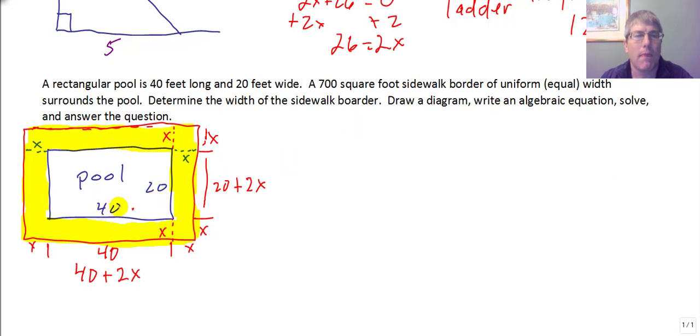We know our pool is 40 by 20. The pool's area is 800. The area of the sidewalk, the yellow all the way around, is 700 more. So my entire length and my entire width equals my total area, the 800 plus the 700. My length times my width equals the entire area.